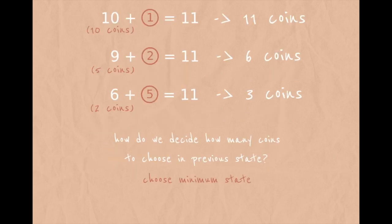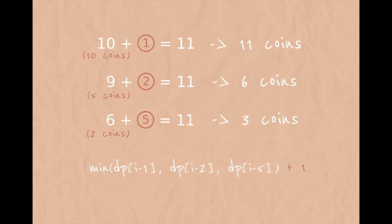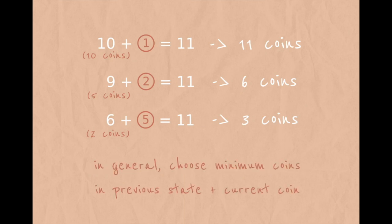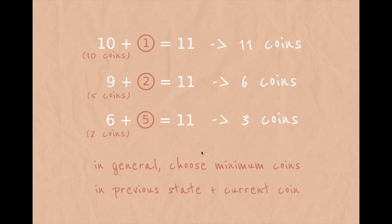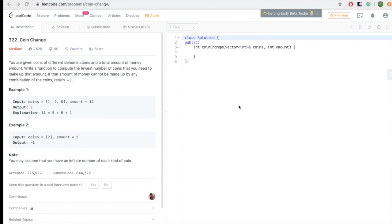To solve this problem, how do we decide how many coins to choose in a previous state? The answer is: choose the minimum state, then add our current state. We have three ways to reach the current state, and we choose the minimum among previous states and add our current coin. This problem falls into the same common pattern as the previous ones.